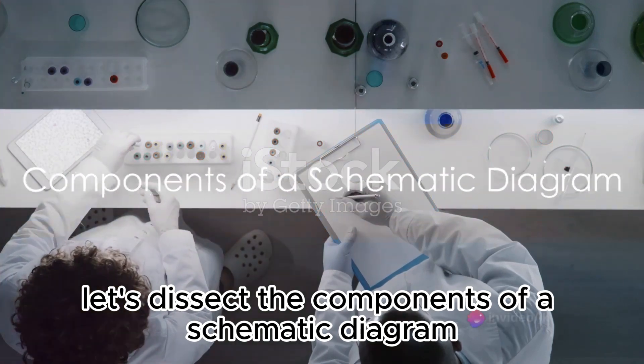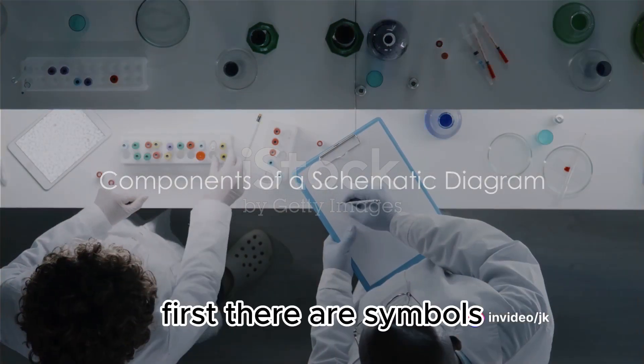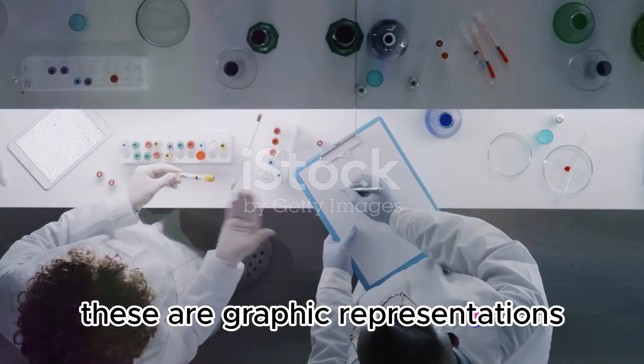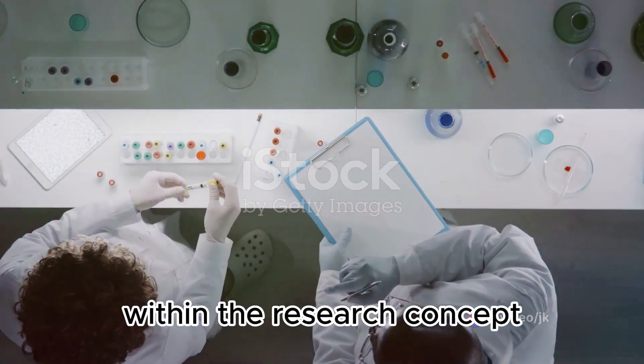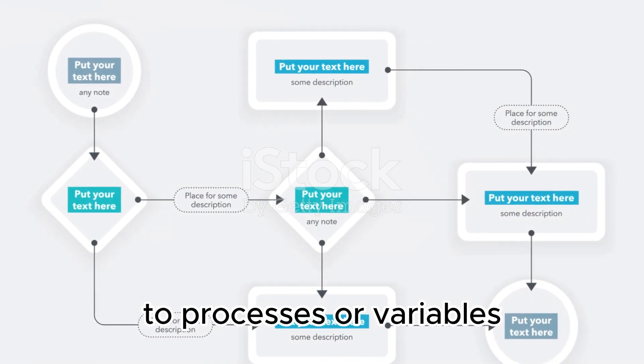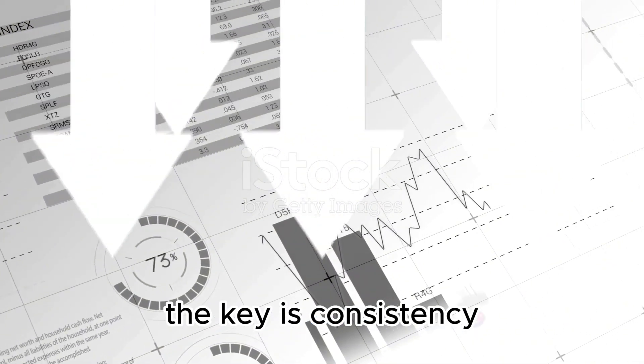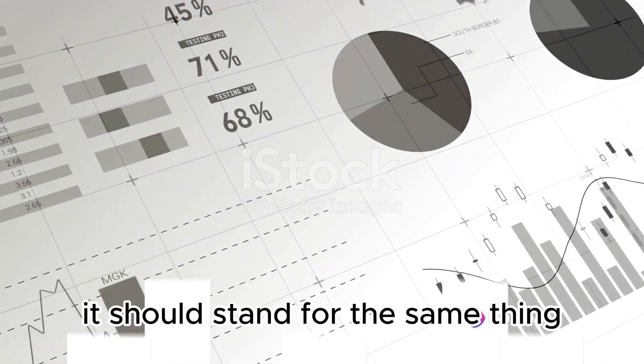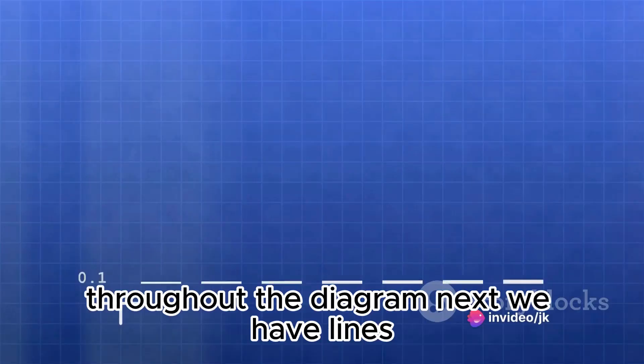Let's dissect the components of a schematic diagram. First, there are symbols. These are graphic representations of the different elements within the research concept. They could represent anything from data points to processes or variables. The key is consistency. Once a symbol is designated to represent something, it should stand for the same thing throughout the diagram.